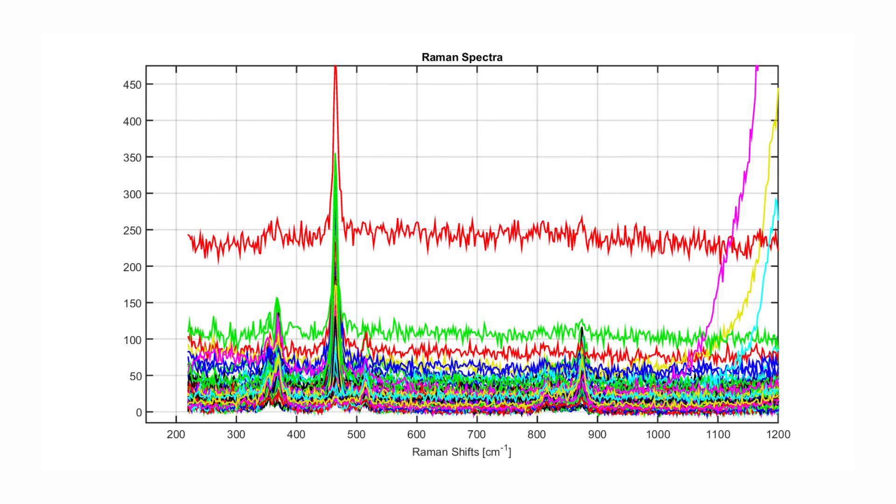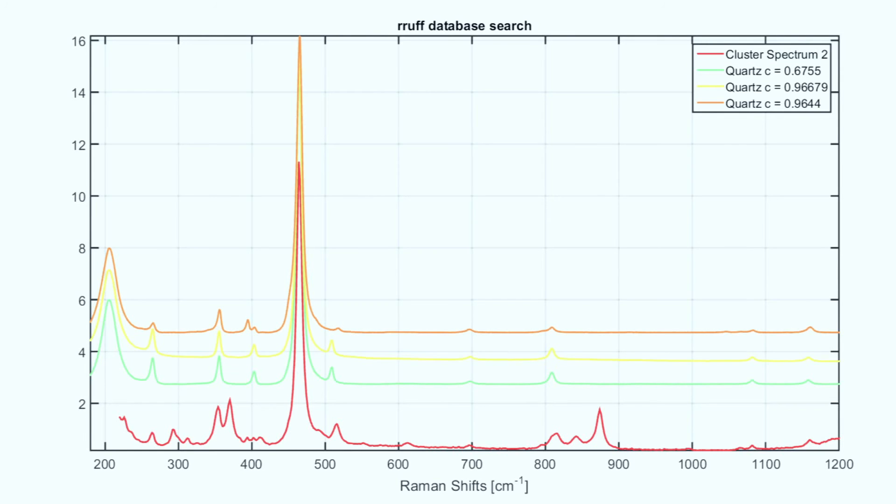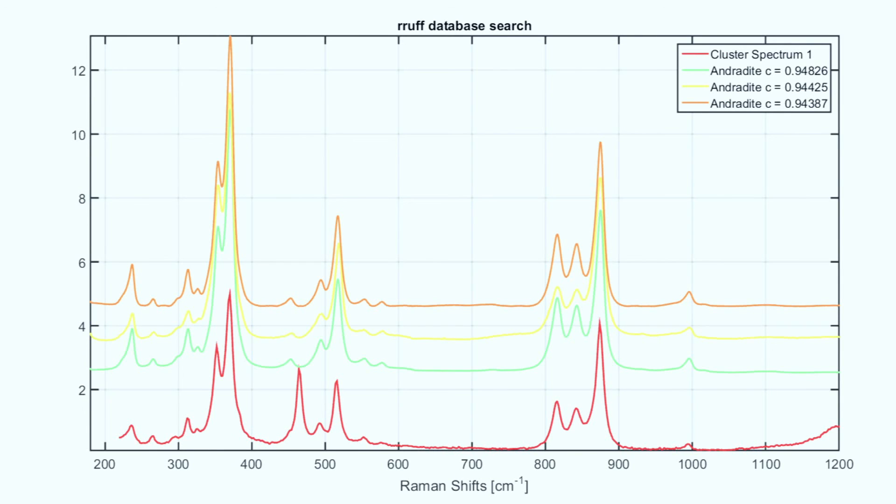Comparing the cluster average spectra with a spectral database identifies the rock material as a mixture of quartz and androdite.